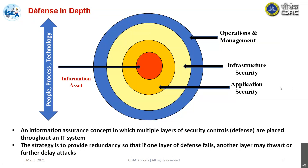This is an information assurance concept in which multiple layers of security controls are placed to provide redundancy, so that if one layer of defense fails, another layer works or at least delays the attack. We have to provide some redundancy in the system.